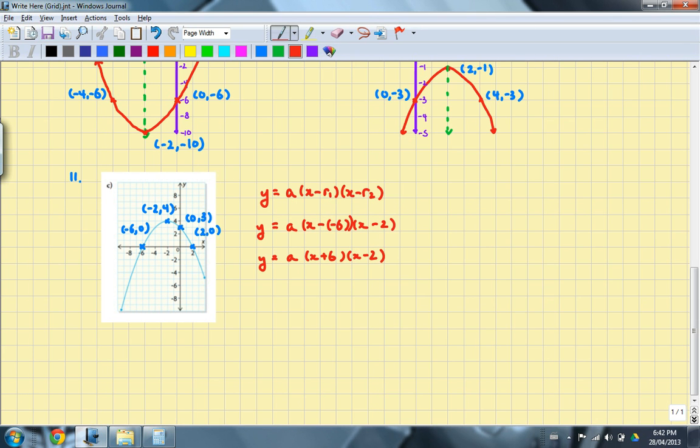Now to solve for a I'm going to plug in the point (0, 3). So 3 = a(0 + 6)(0 - 2). You can go ahead and do that. I will have 3 = a(6 × -2). So 3 = a × -12. So if you kept going, a is going to be equal to -1/4.